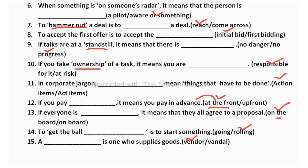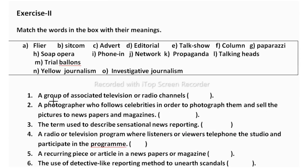This is all about exercise one. Now let's see exercise two, where you match words in the box with their meanings, similar to how you did exercise one. The first one: a group of associated television or radio channels is called what? That is nothing but a network. So the correct answer is network, which is J.